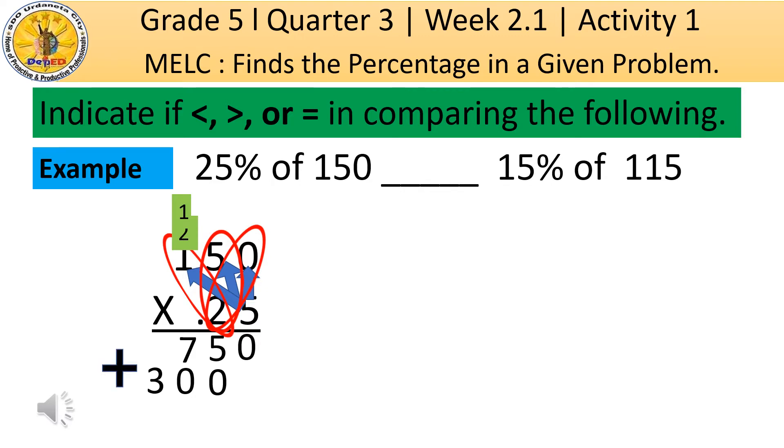Then, we can add already. Bring down 0. 5 plus 0 is equal to 5. Then, 7 plus 0 is equal to 7. And, bring down 3. Therefore, the product of 25% of 150 is 37 and 50 hundreds.